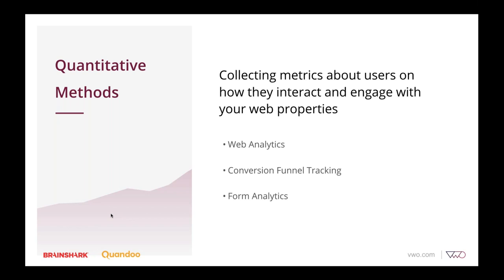First up, we have quantitative methods. Quantitative techniques involve collecting metrics about users on how they interact and engage with your website. These numbers are later used to understand visitor behavior. The most common example is gathering analytics from simple metrics like number of sessions, bounce rate, and time spent on the page, to conversion-focused metrics like measuring how many users clicked on a CTA button or filled out a demo form. Advanced practitioners also adopt conversion funnel tracking, where they track how many users are dropping from the primary pathway — for example, tracking the buyer journey from search to checkout for e-commerce.